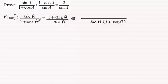So what do I multiply the denominator here, 1 plus cos A by, to get this denominator? Well it's sin A, so I need to multiply the numerator by sin A. So we're going to get sin A times sin A, which is going to be sin squared A.